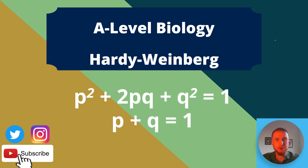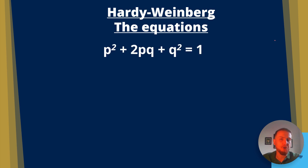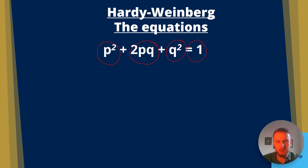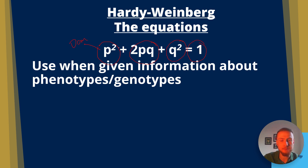Let's talk about the Hardy-Weinberg Principle. The two key equations you need to know are: first, P squared plus 2PQ plus Q squared equals 1. Use this when you're given information about the phenotypes and the genotypes. P squared is the dominant genotype, 2PQ is the heterozygous genotype, and Q squared is the homozygous recessive genotype.